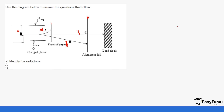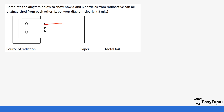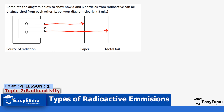And C is gamma radiation. Then complete the diagram to show how alpha and beta particles from radioactive sources can be distinguished from each other. For alpha, the arrow would come and stop at the paper; for beta, the arrow would come and is stopped by the aluminium foil. The penetrating power of alpha is not as much as that of the beta particle — that is why alpha is stopped by paper and beta is stopped by the metallic foil because it has higher penetrating power.